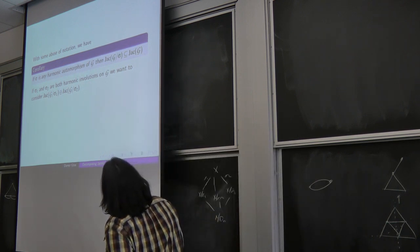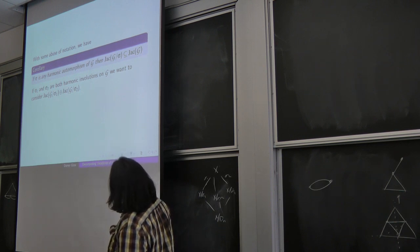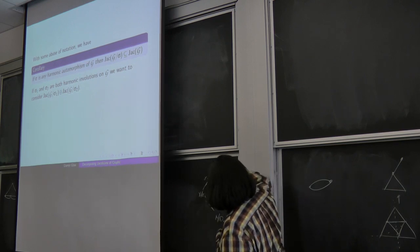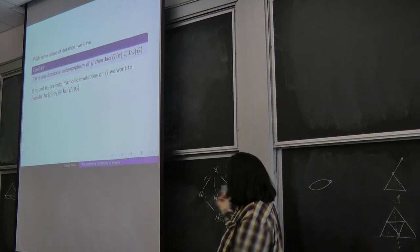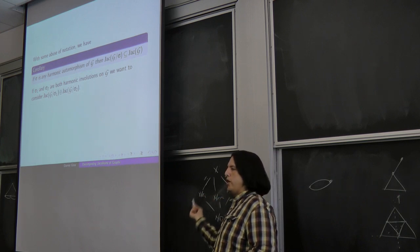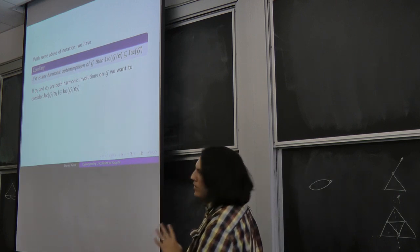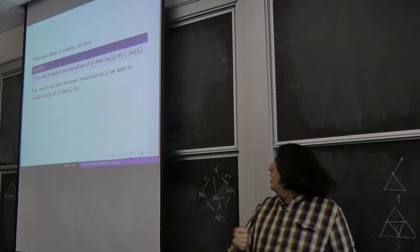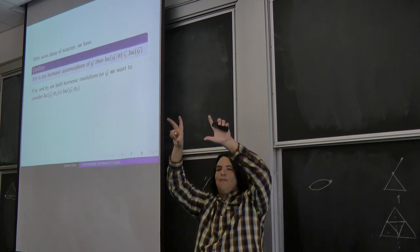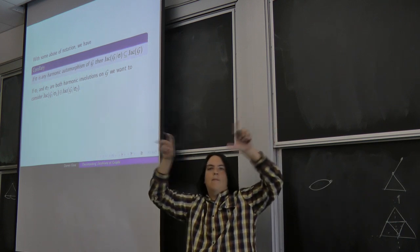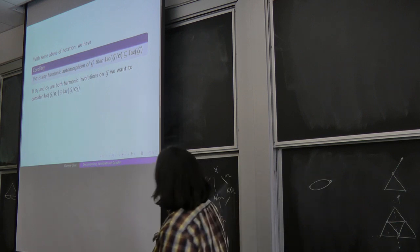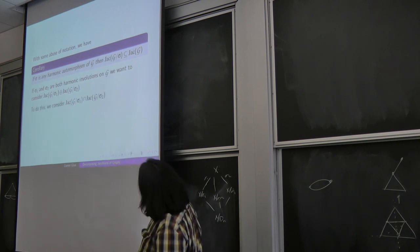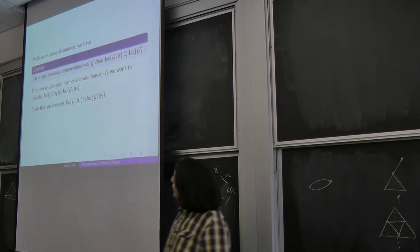Using the injectivity of pullback, the Jacobian of any quotient G/σ embeds as a subgroup of the Jacobian of G. So we have three subgroups: the pullbacks from G/σ₁, G/σ₂, and G/(σ₁σ₂). The key question is whether the sum of those three subgroups is direct — which requires understanding their pairwise intersections.